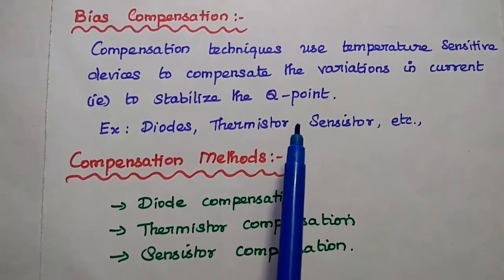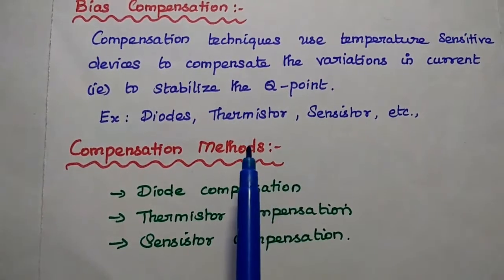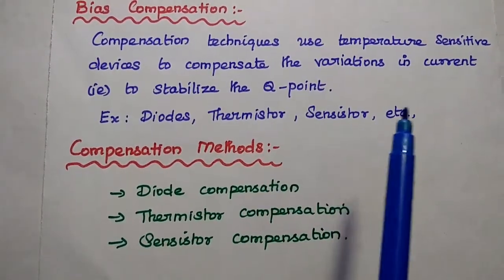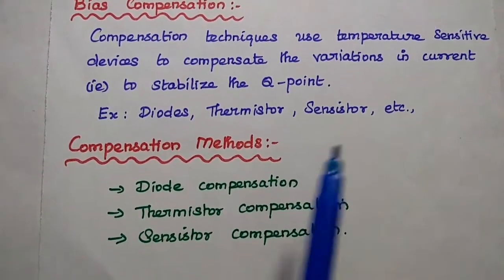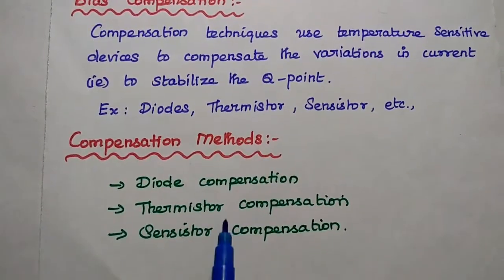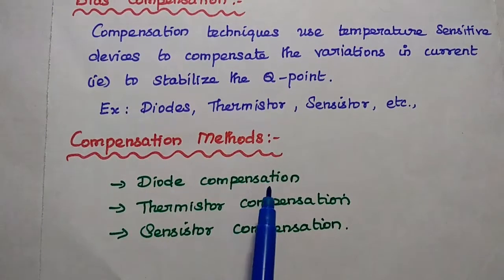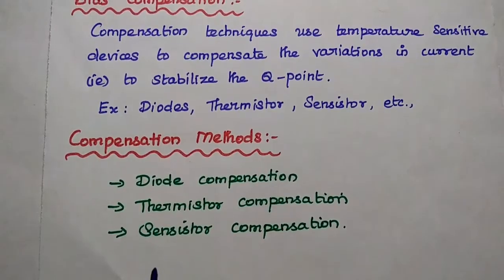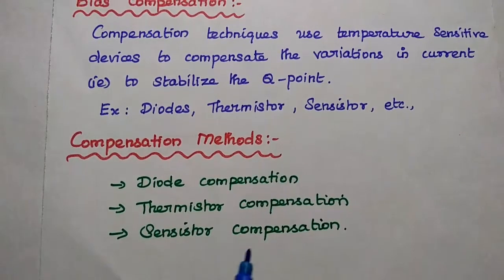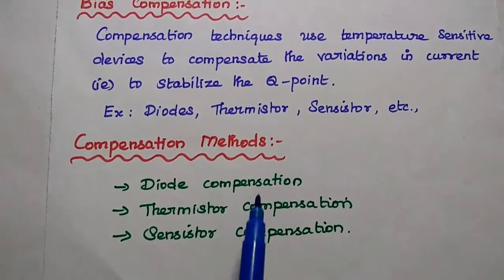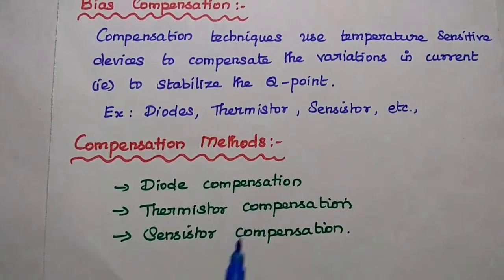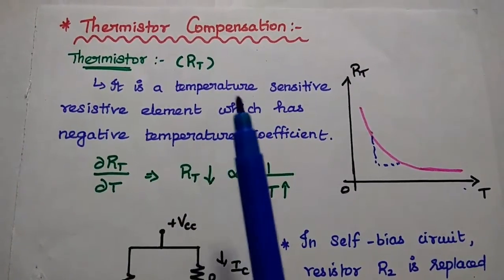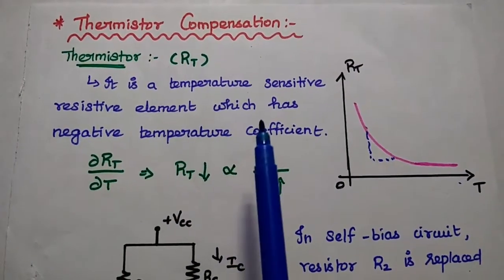To maintain the Q point stable, we have to keep the output current constant. There are three methods: diode compensation, thermistor compensation, and sensistor compensation. Let's discuss each type in detail.